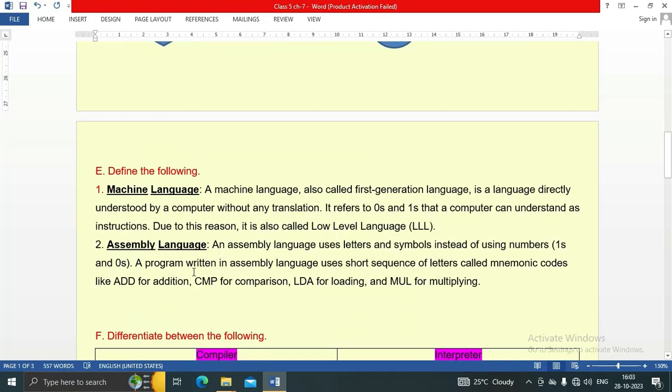Question E: define the following. Number one: machine language. A machine language, also called first generation language, is a language directly understood by a computer without any translation. It refers to zeros and ones that a computer can understand as instructions. Due to this reason, it is also called low level language.